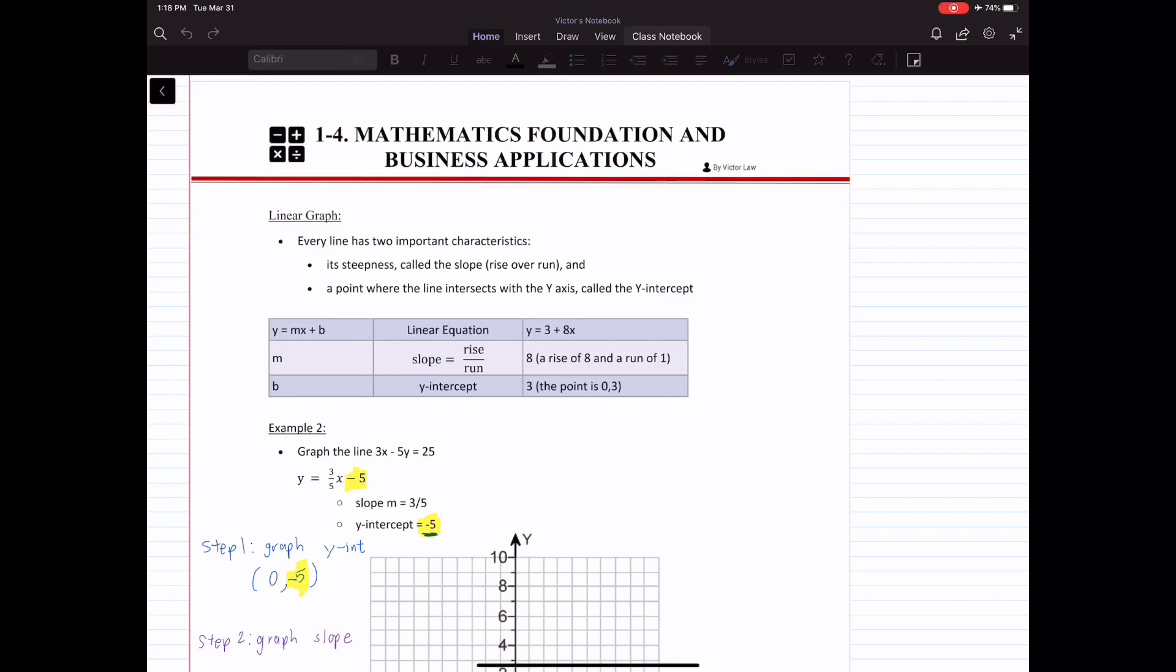The example I gave you is y equals 3 plus 8x. So 3 is your y-intercept, and 8 is your slope. What the slope 8 represents is that if you increase x by 1, your y will increase by 8.